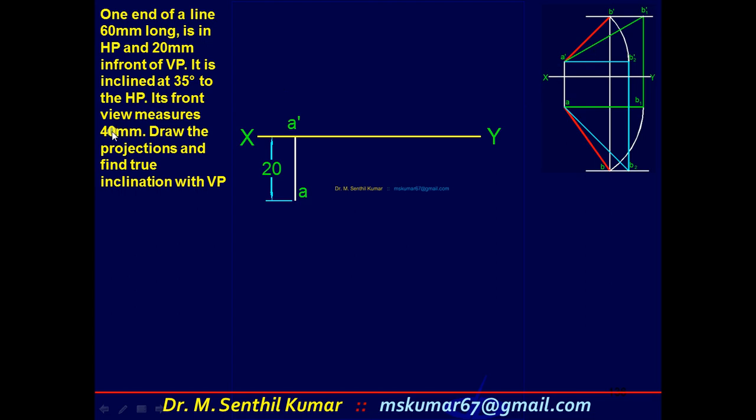Then the front view measures, front view length is 40, so this length is 40 as well as this length is also 40. So mark 40, 40 here. Again I repeat: zero here, 20 here, this is 60, this is 60, its angle is 35, its length is 40.